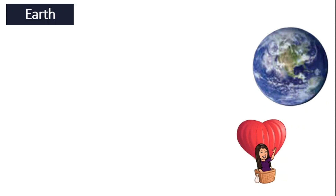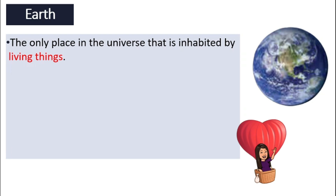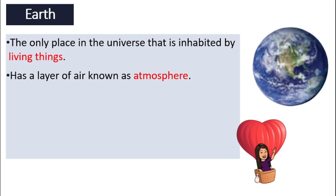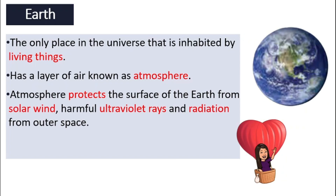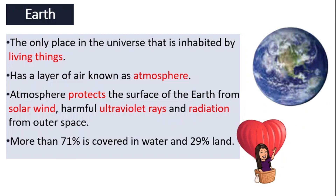Next, let's go to our beloved Earth. This is our Mother Earth — the only place in the universe where we can find living things, at least at this point. It also has a layer of air known as atmosphere, and this atmosphere protects us from solar wind, harmful ultraviolet rays, UV rays, and radiation from outer space. More than 71% of our Earth is covered in water and about 29% is actual land.